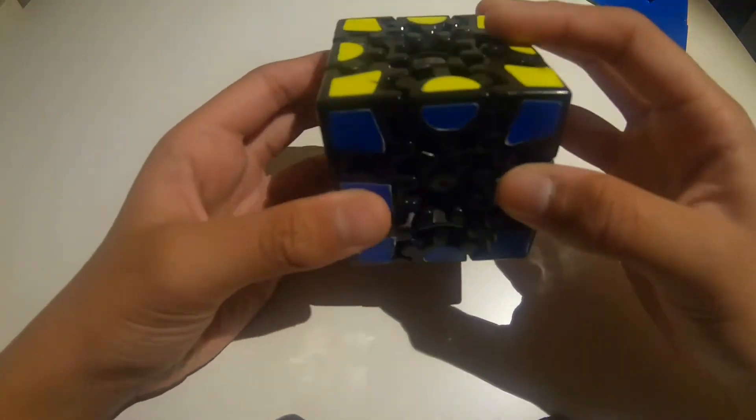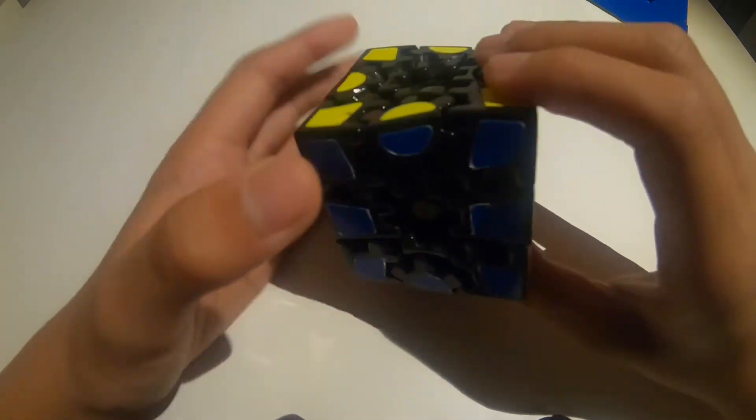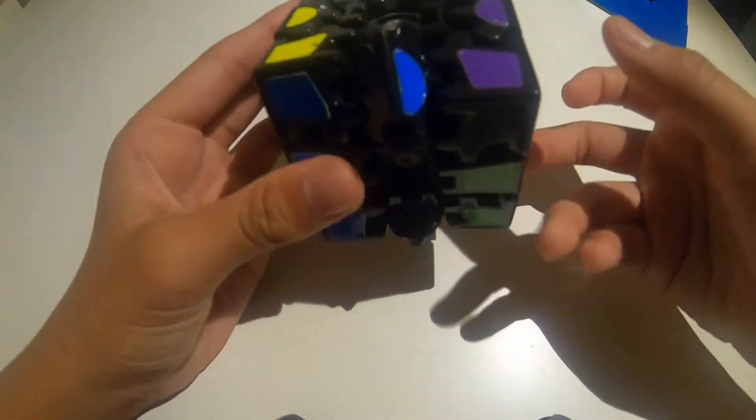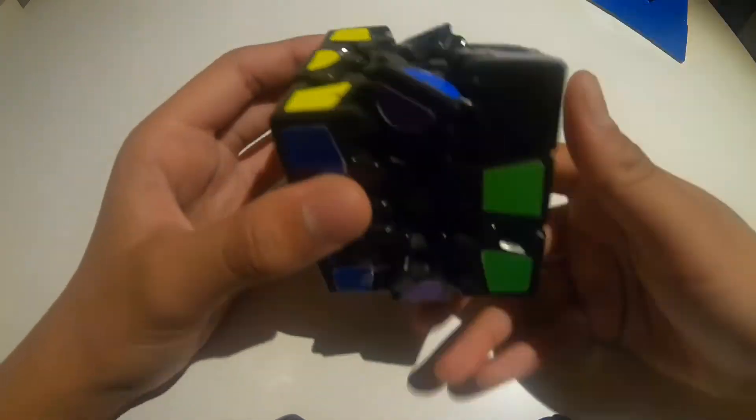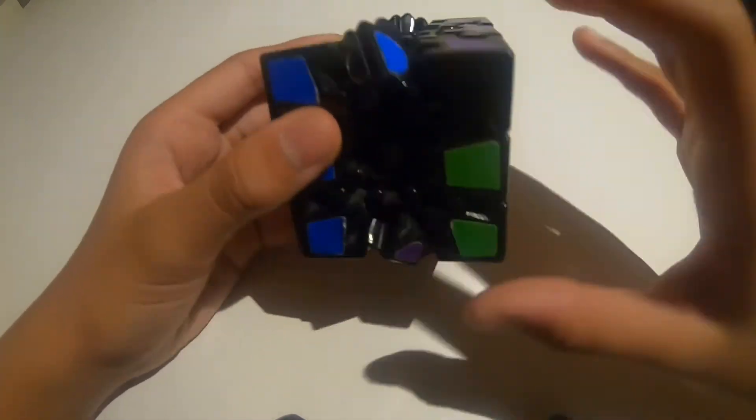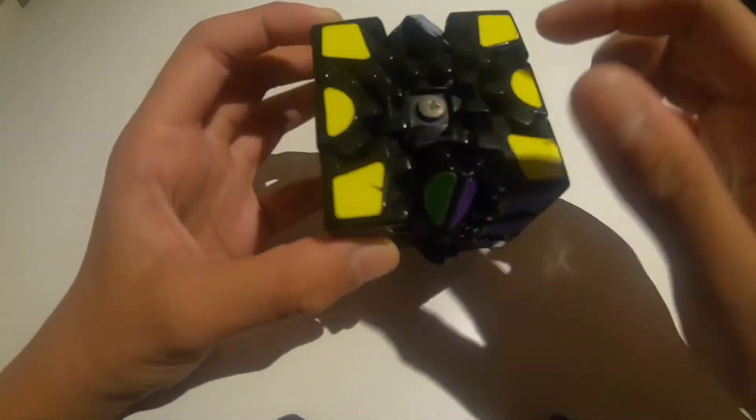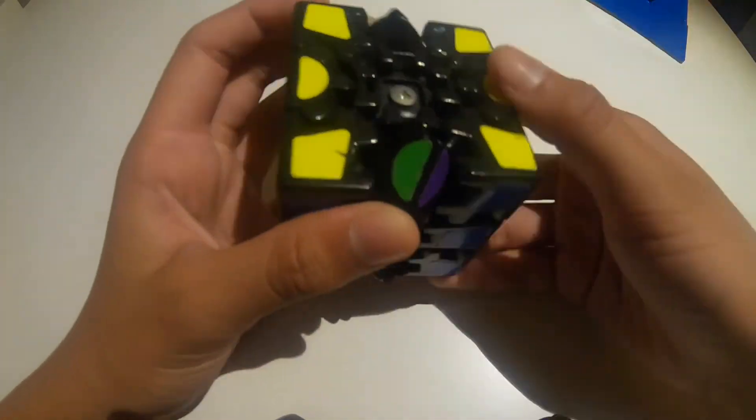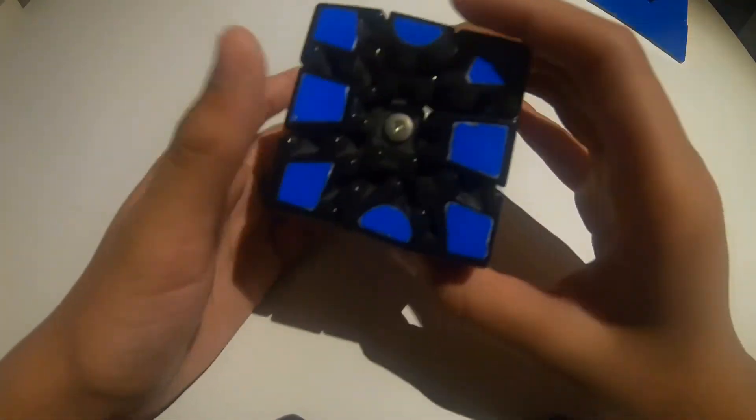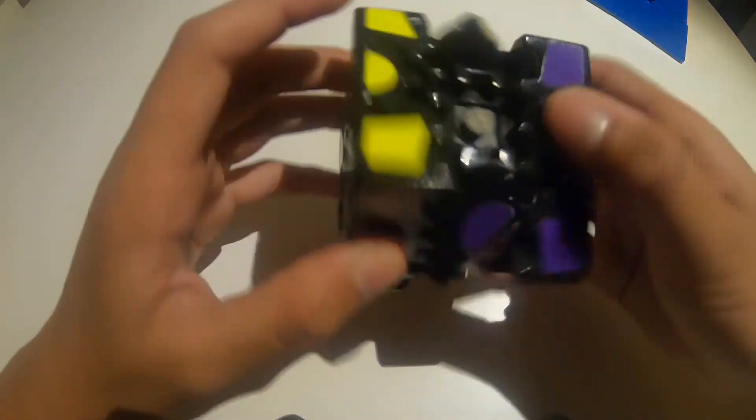So in case you don't know what the GearCube is, basically on some sides you can turn it, and basically if you do a double turn, basically the middle goes by one. So as you can see, I've just done a full turn, and it basically has gears that basically make it move weirdly.